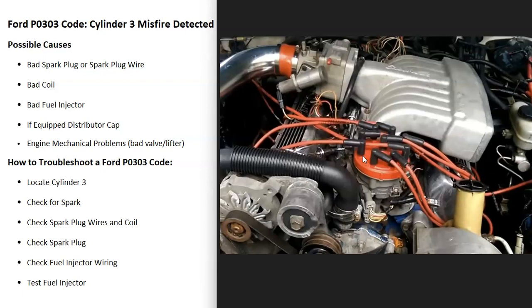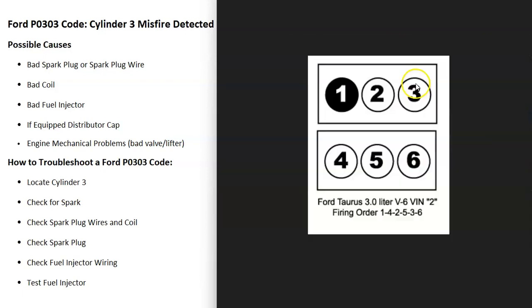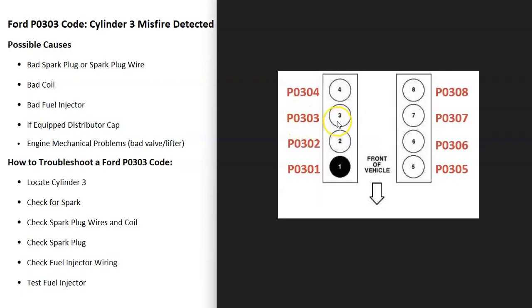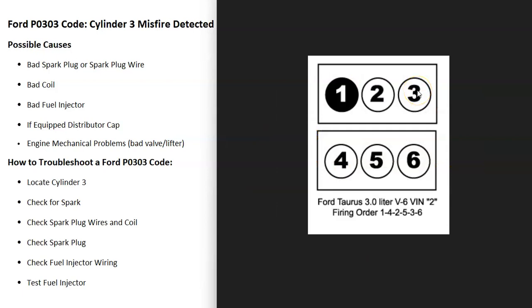Usually when you have this problem, there's either going to be an issue with the spark going to cylinder number three or with the fuel going into cylinder number three. To troubleshoot a Ford with the P0303 code, the first thing to do is locate cylinder number three. These codes point to which cylinder is having the problem — for example, a P0301 would be cylinder one, so a P0303 is cylinder three. Go locate that cylinder on your particular engine.